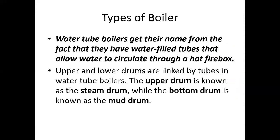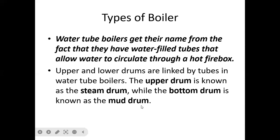There are two types of boilers: water tube boilers and fire tube boilers. Water tube boilers get their name from the fact that they have water-filled tubes that allow water to circulate throughout a hot firebox. Upper and lower drums are linked by tubes. The upper drum is known as the steam drum and the bottom drum is known as the mud drum, because solids and sludge settle there.